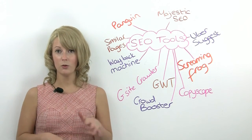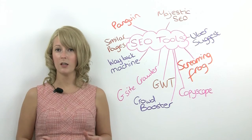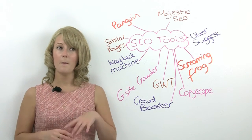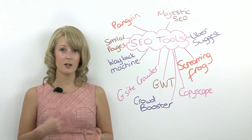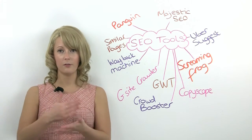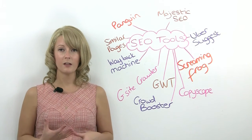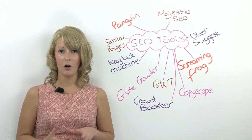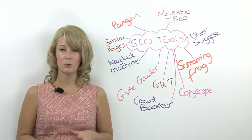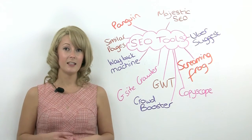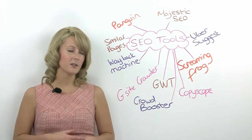It basically takes your keyword and looks at what all the suggestions would be before it and after it, going through the alphabet. So it's really nice for current and up-to-date ideas for titles and content and anything that needs to be really fresh.